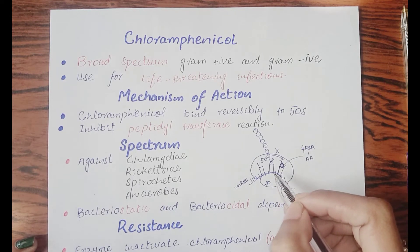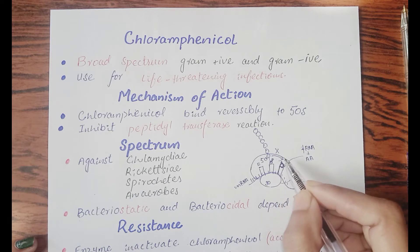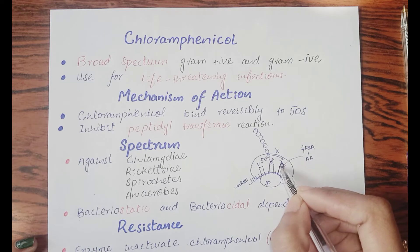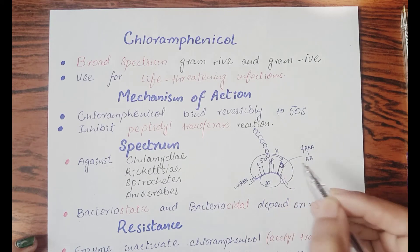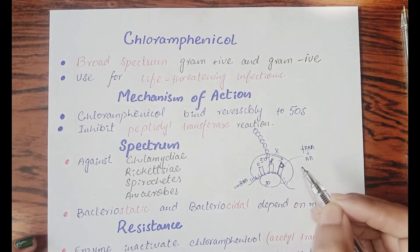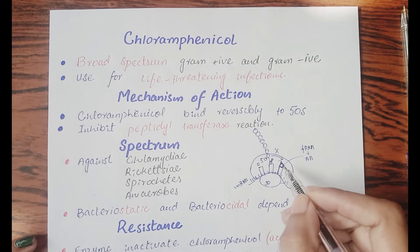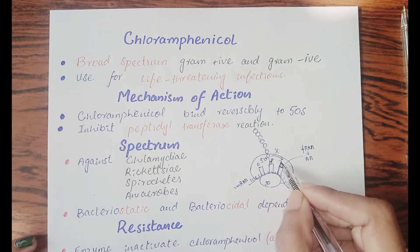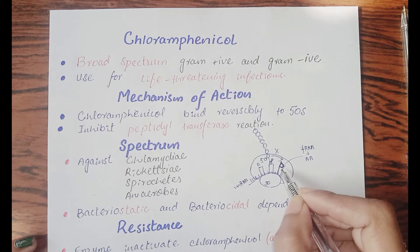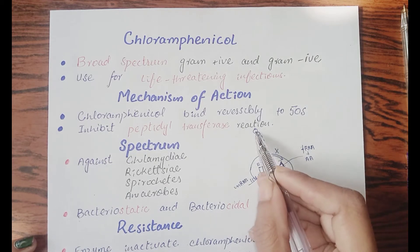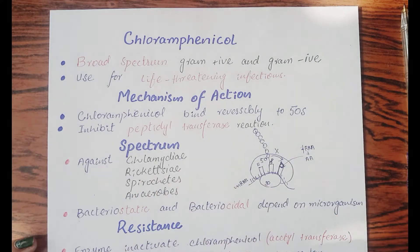In chloramphenicol's mechanism, protein synthesis is inhibited by preventing peptide bond formation. The drug inhibits the transfer of the chain from the P site to the A site. Since the new amino acid remains bound at the A site, that binding site is never freed, so the next amino acid cannot attach. This prevents peptide bond formation and inhibits protein synthesis entirely.